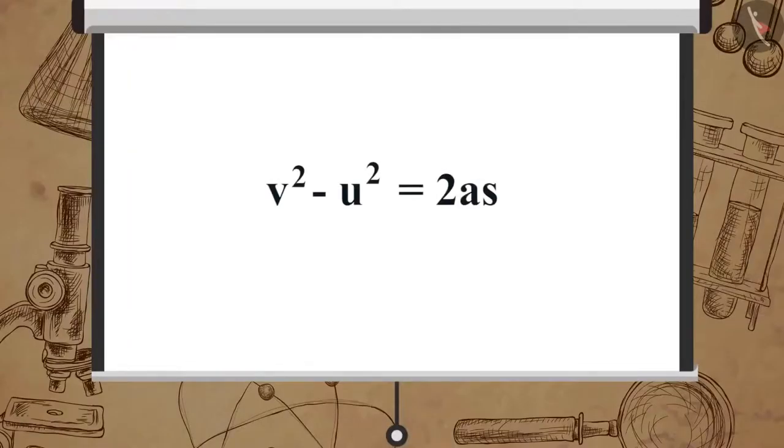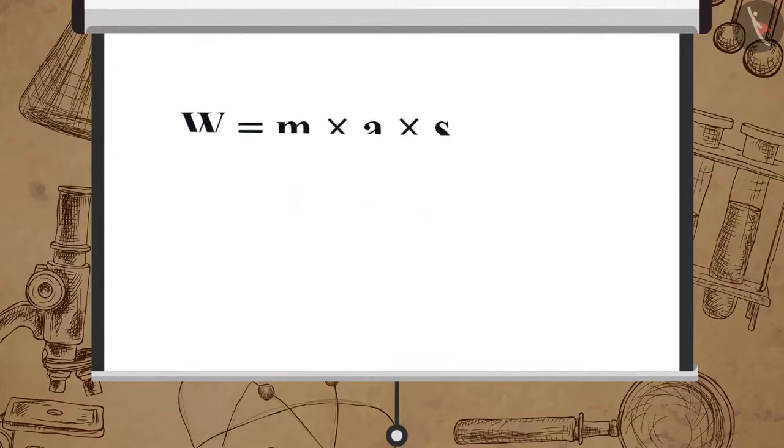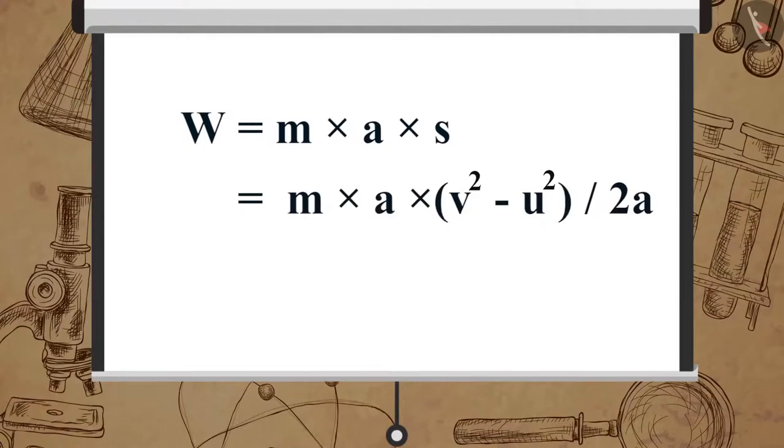Remember we studied the three equations of motion. According to the third equation, v squared minus u squared equals 2as, from which we derive displacement s equals v squared minus u squared divided by 2a. We also know F equals ma. Now work done can be written as W equals m times a times s, which equals m times a times (v squared minus u squared) divided by 2a.